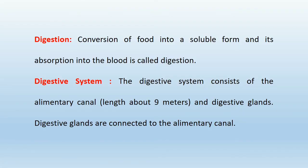Digestion. The conversion of food into a soluble form and its absorption into the blood is called Digestion. The digestive system consists of the alimentary canal and digestive glands. Digestive glands are connected to the alimentary canal.